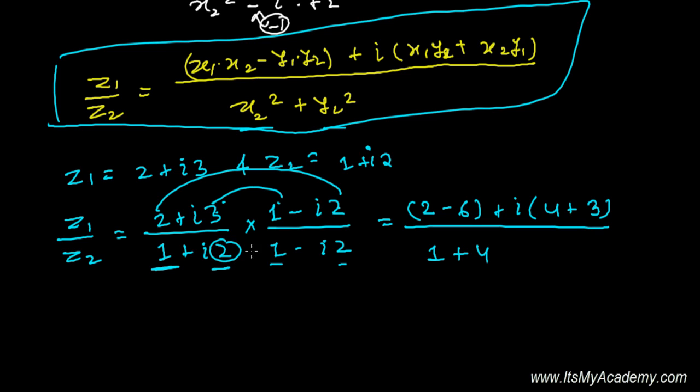Using the (a+b)(a-b) formula, a² is 1 plus b² is 4. 2 - 6 is -4, plus 4 + 3 is 7, so 7i divided by 1 + 4, that's 5. Finally it's -4/5 + 7i/5.